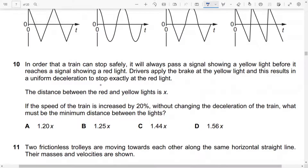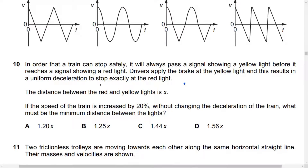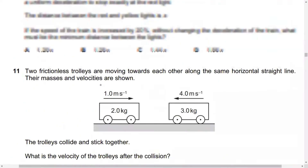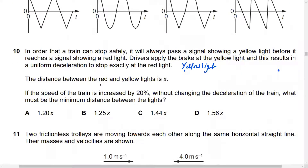You have a train that can stop safely, and it will pass a signal showing a yellow light. Before it reaches a signal showing a red light, the driver applies the brakes at the yellow light, and this results in a uniform deceleration to stop exactly at the red light. Final velocity is zero — the train can stop.